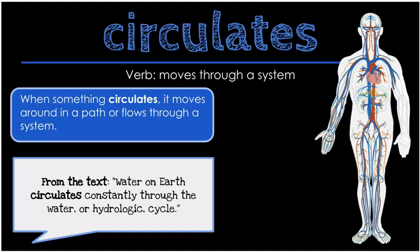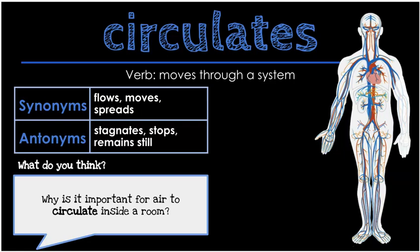Our next word is circulates. Circulates is a verb. It means to move through a system. When something circulates, it moves around in a path or flows through a system. Here I put our circulatory system, and we can see that our blood circulates and goes through our entire body. From the text: water on earth circulates constantly through the water, or hydrologic, cycle. Some synonyms for circulates would be flows, moves, or spreads. Some antonyms might be stagnates, stops, or remains still.